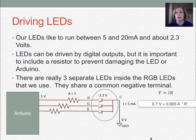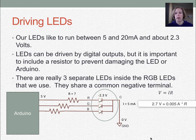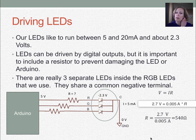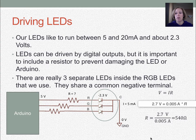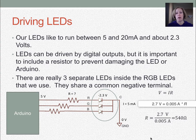If we assume 2.7 volts — which is the voltage drop left over after we subtract the 2.3 volts for the LED from 5 volts — and use 5 milliamps converted to amps, that's multiplied by the resistance value we want to find. Rearranging, the resistance equals 2.7 volts divided by 0.005 amps, which gives us 540 ohms. That's the resistor that will be safe for us to use.